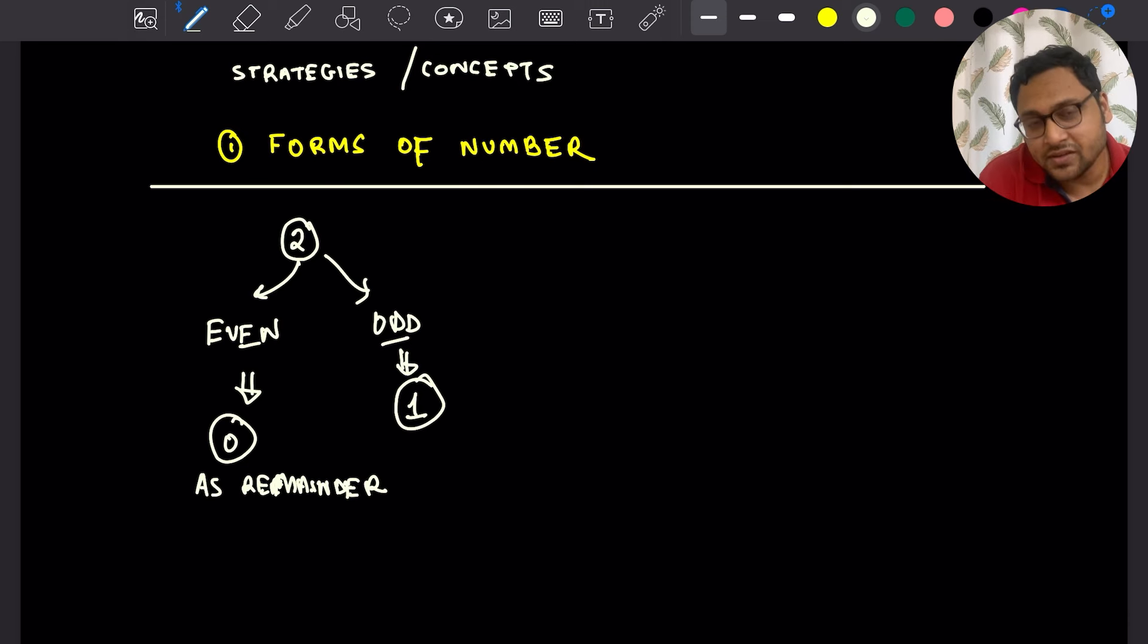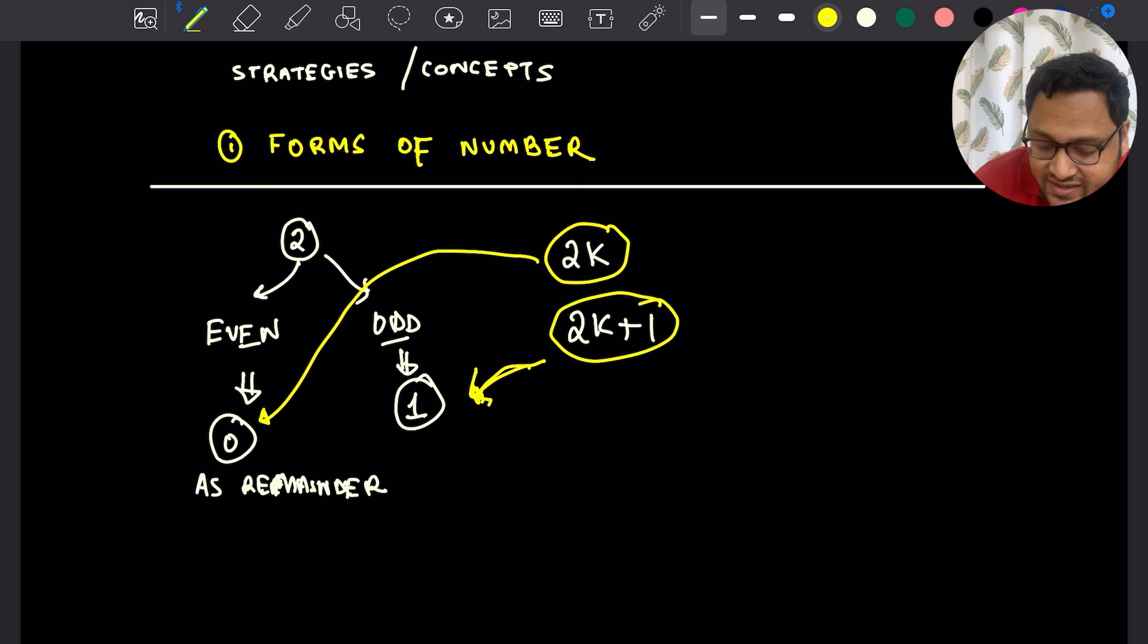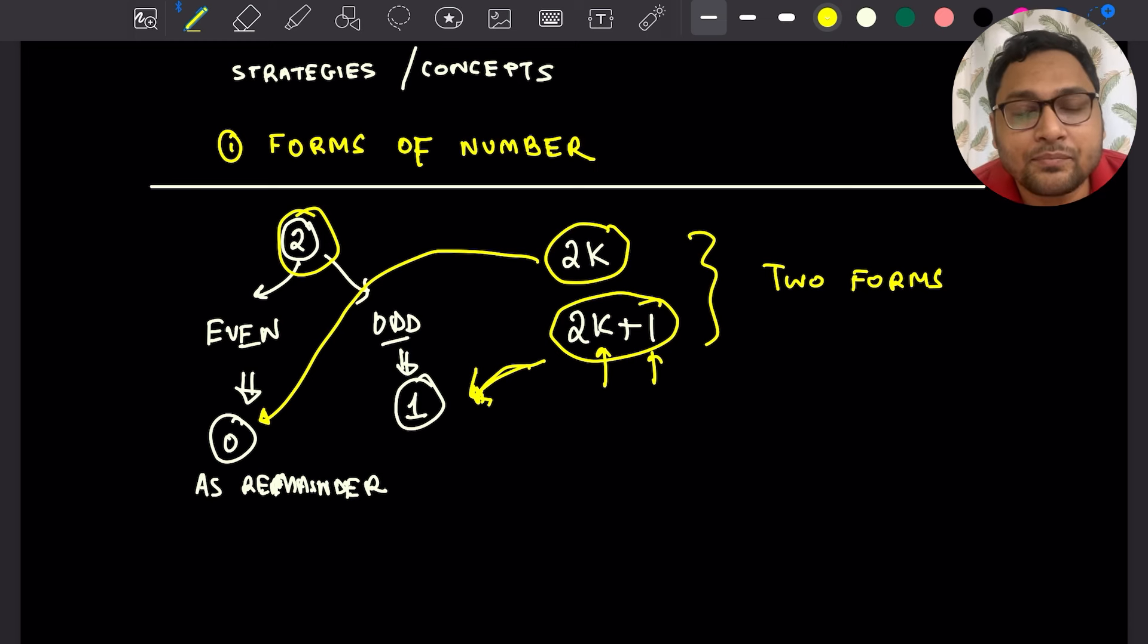You can write any integer using 2. How can you do that? It's 2k and 2k plus 1. 2k means the number is divisible by 2, or it's an even number, or it produces remainder 0 when divided by 2. And 2k plus 1 is the odd numbers form. It clearly says k is the quotient and 1 is the remainder if you divide the number by 2. These are the two forms based on the number 2.